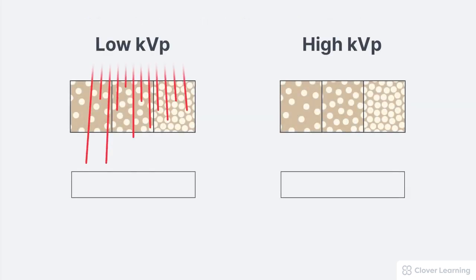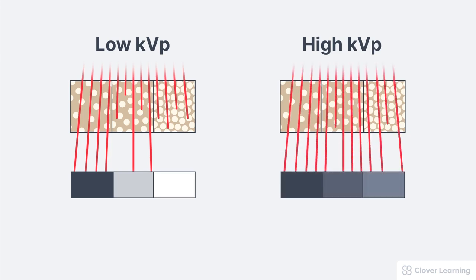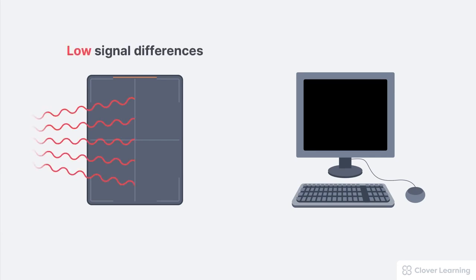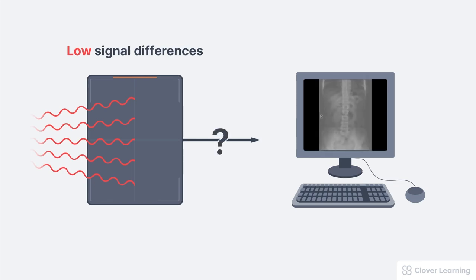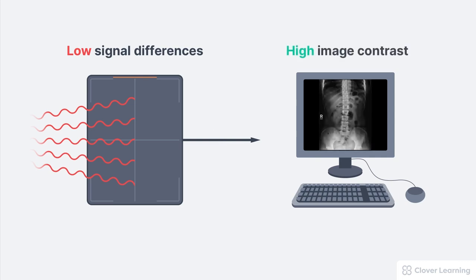Changing the KVP affects the signal difference in the remnant beam. When the KVP becomes too high for the part being imaged, the part is overly penetrated and the signal differences exiting the patient are very small. It's possible for the signal difference to be so similar that the computer cannot detect any differences and the resulting image contrast is degraded. Fortunately, modern radiography systems are so good at detecting signal differences that changes in KVP have only a very tiny effect on image contrast. The computer system can create high image contrast even when the signal differences are very small.